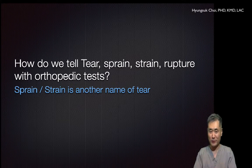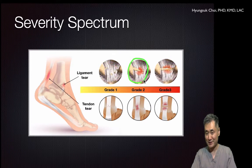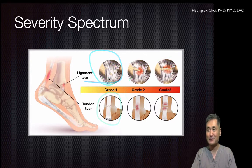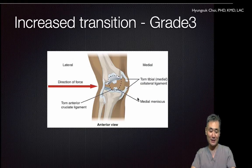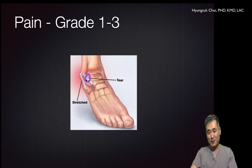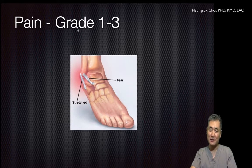How do we tell tear, sprain, strain, and rupture with an orthopedic test? Grade one tear we call inflammation or tendinopathy; grade two tear we call a tear; grade three we call rupture or total tear. The same for tendon tear: grade one is tendinitis, and grade two is a sprain — actually the same injury. If there is transition, that is a grade three tear. Suppose the patient has a ligament tear and you do an anterior drawer test of the ankle, but the patient shows pain and an unclear end point — that is a grade one or two tear.